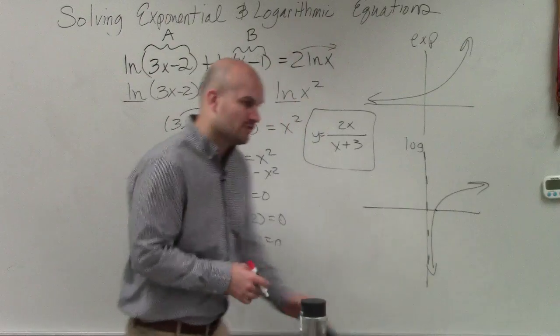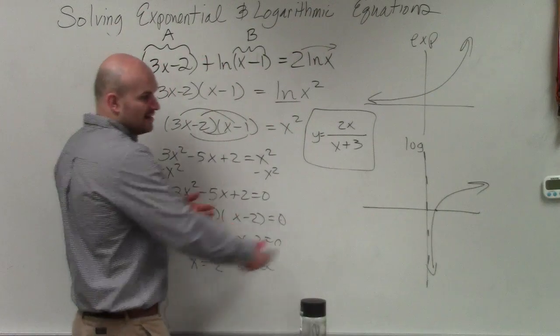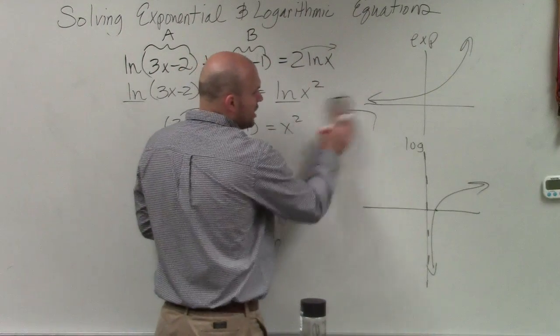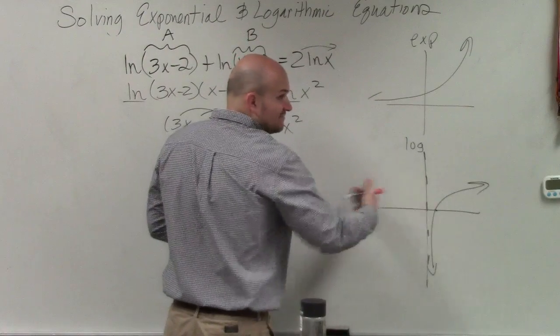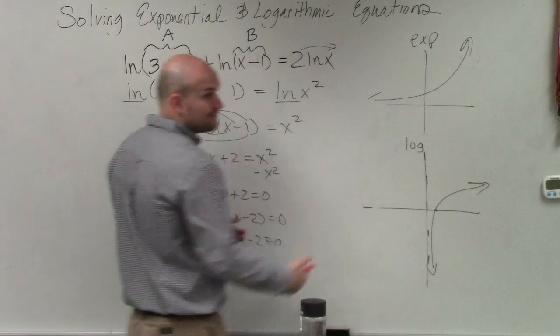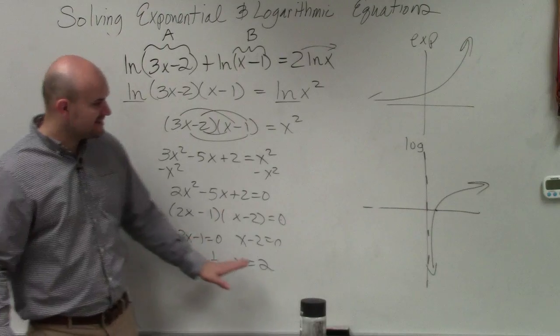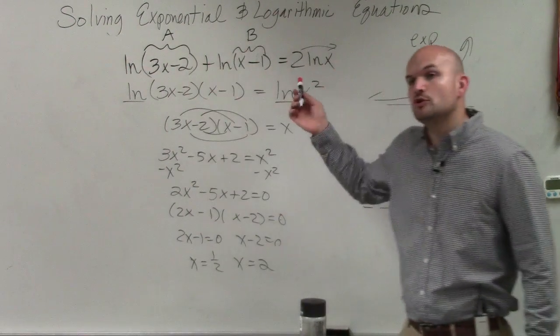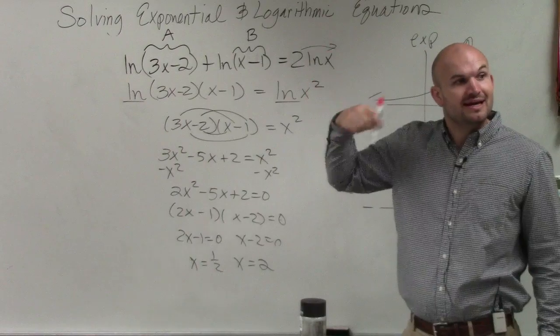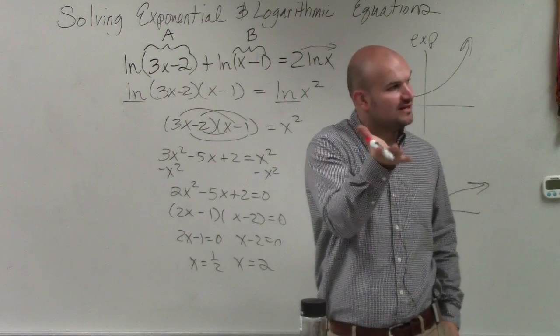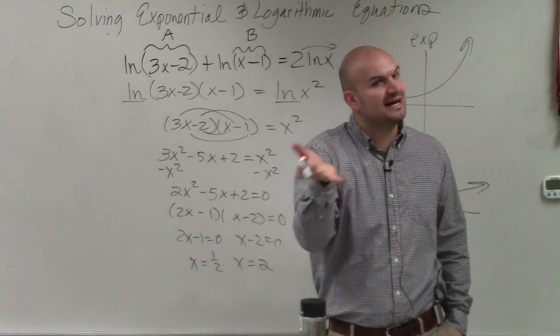Well, the same thing goes for a logarithm. We have restrictions on our domain. Based on the graph, we know that negative numbers are not a part of our domain. So what I want you guys to do is take your solutions and plug them back into x for your logarithms. If you have to take the log of a negative number, you know that is not a solution.